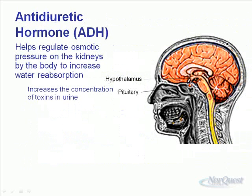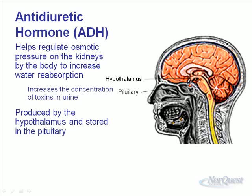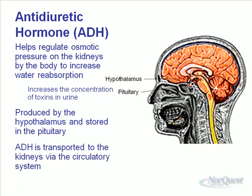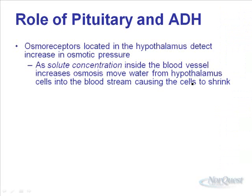ADH — antidiuretic hormone — helps regulate osmotic pressure by increasing water reabsorption in the kidneys. It increases the concentration of waste in urine, so urine becomes more concentrated. ADH is produced by the hypothalamus and stored in the pituitary, both located in the brain. When ADH is required, it's released from the pituitary into the circulatory system, traveling to the kidneys where it makes the distal tubules and collecting ducts more permeable to water.